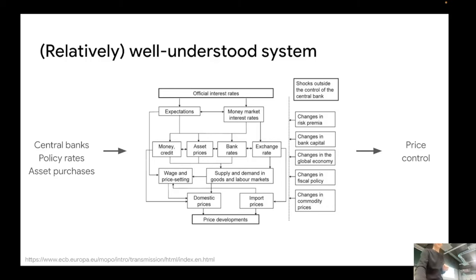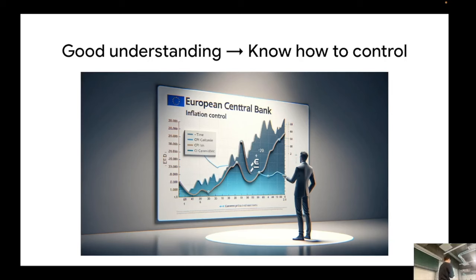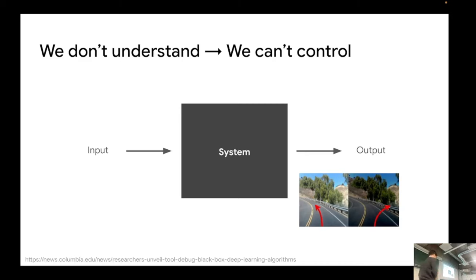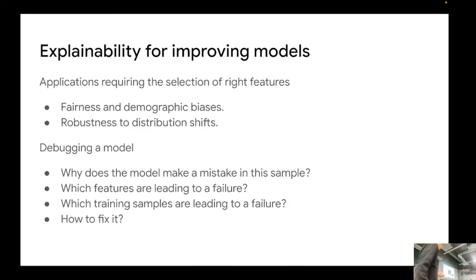If you know the system well, it's easier to control it. But if the internal mechanism is unknown, it's a black-box system. A good example is a self-driving car — it used to follow the path, but in some conditions it decided not to, and you'd like to control this phenomenon but don't know how because you don't know what's going on inside. That's the problem with machine learning in general: we need better explainability to eventually improve the models.